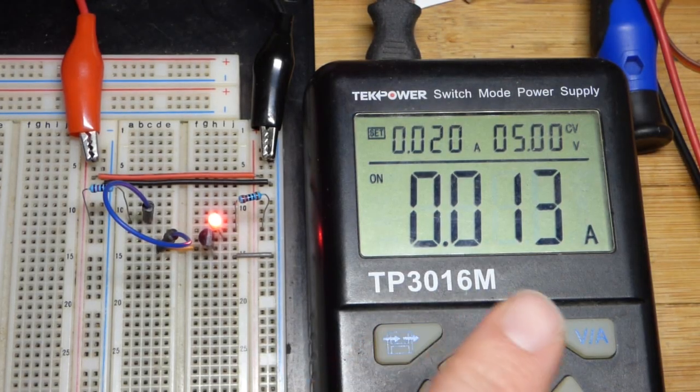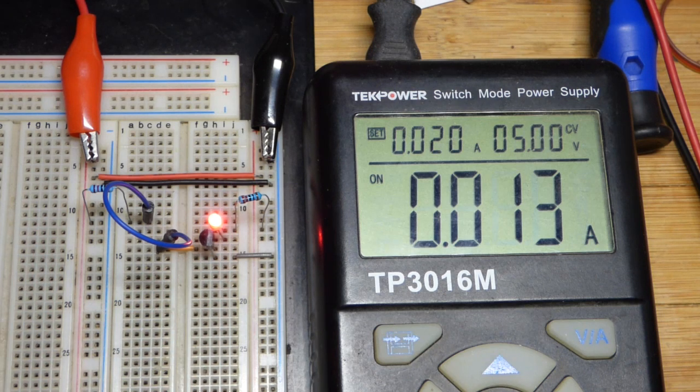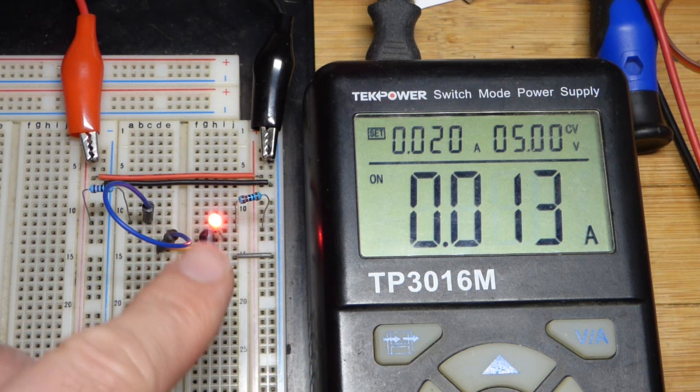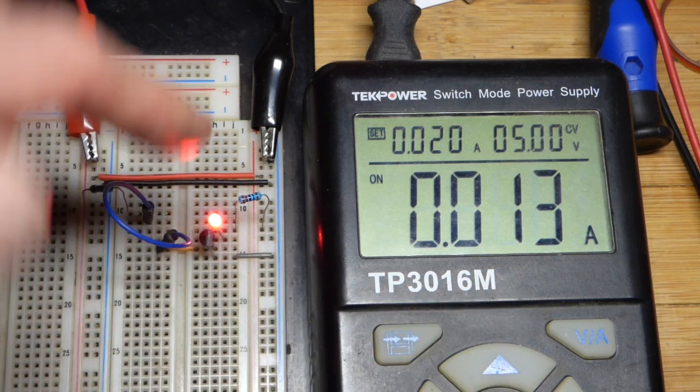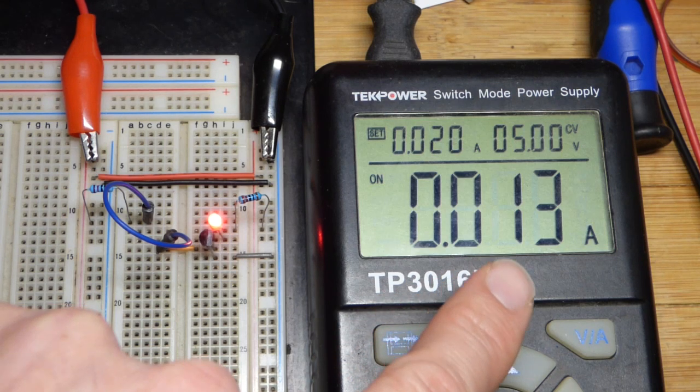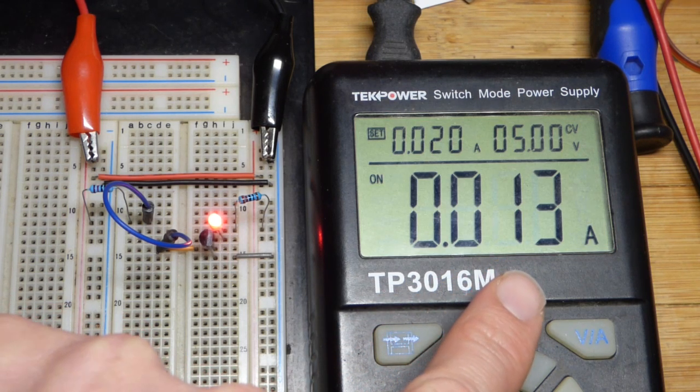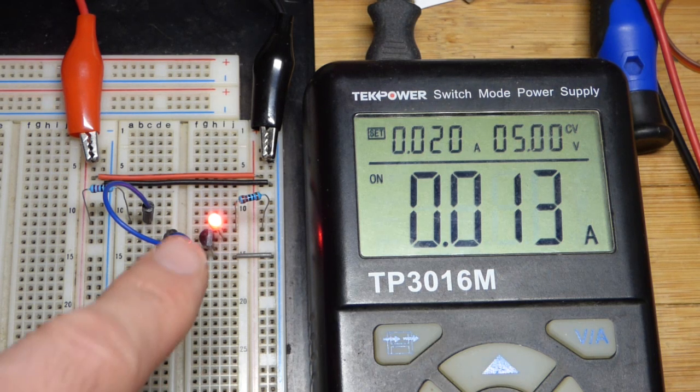So now in this video, we're going to look at current again. We're going to look at the current to the base of an NPN bipolar junction transistor. So right now the transistor is on, we have the red LED current being set by a 220 ohm resistor, 5 volt power supply. We did Ohm's law before to find that'll give us about 13.6 milliamps of current.